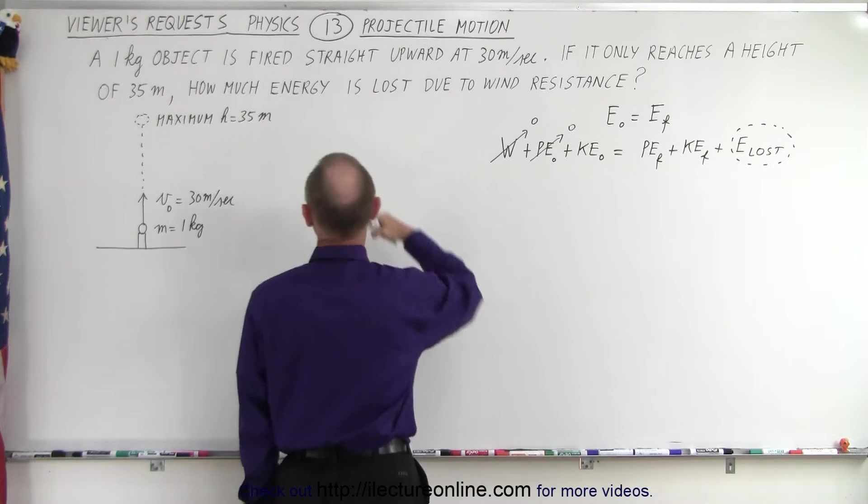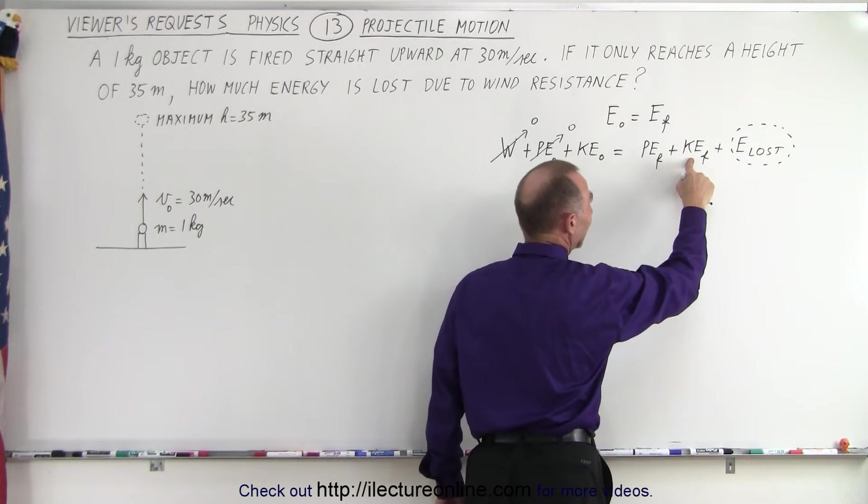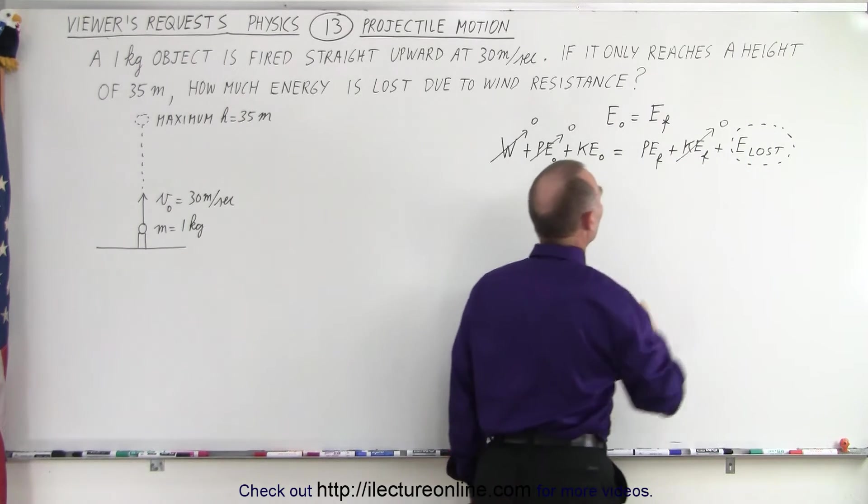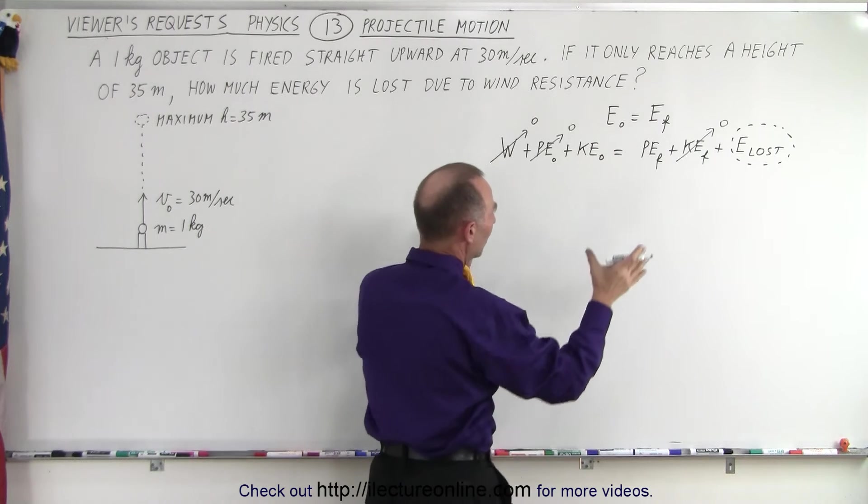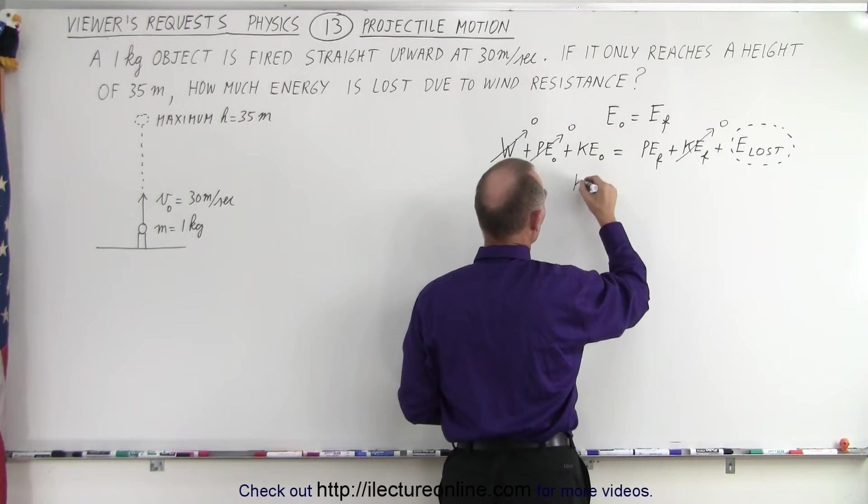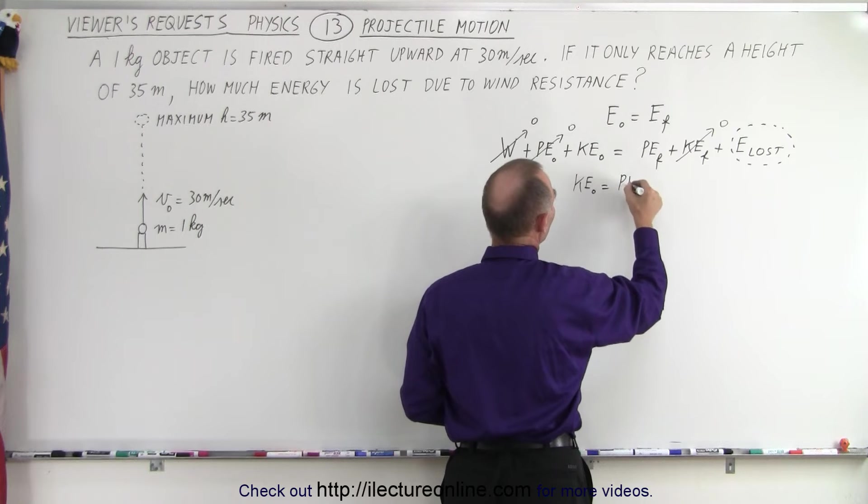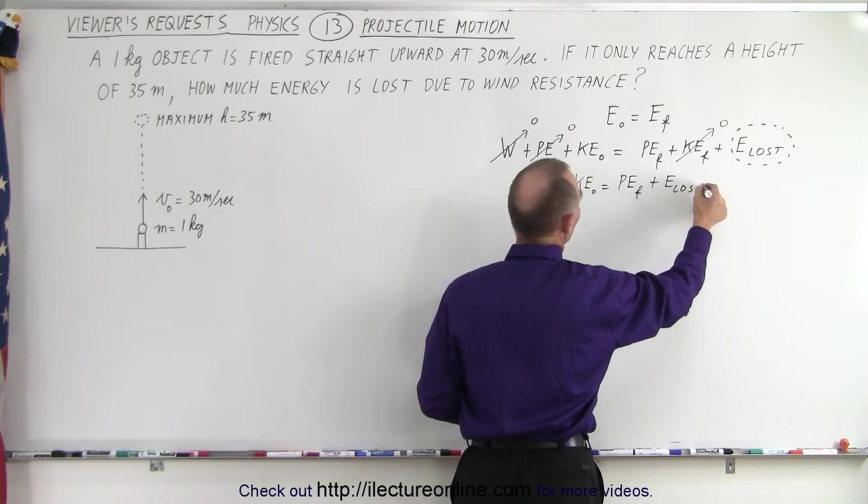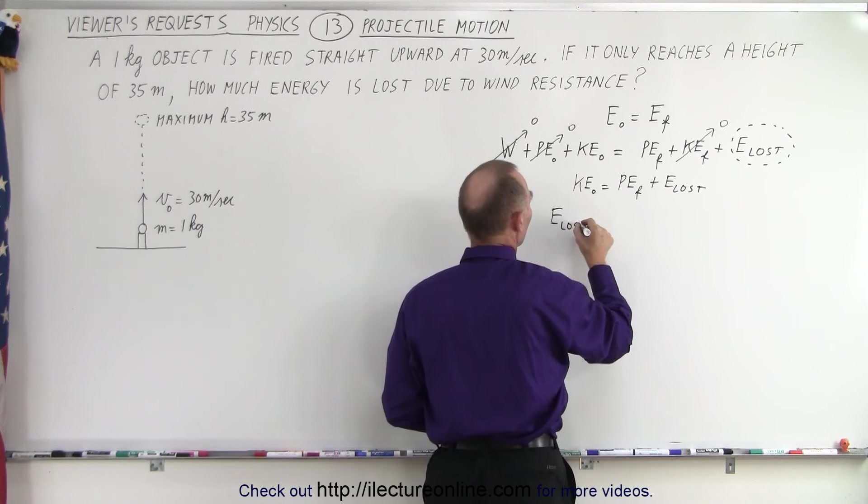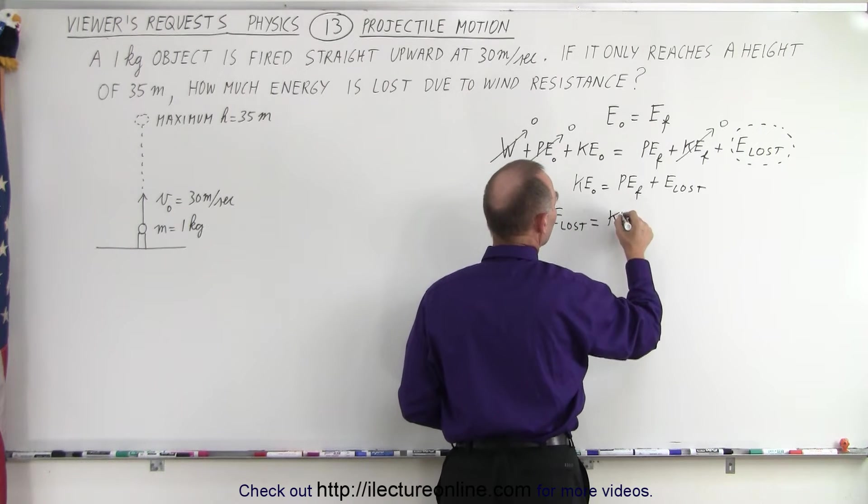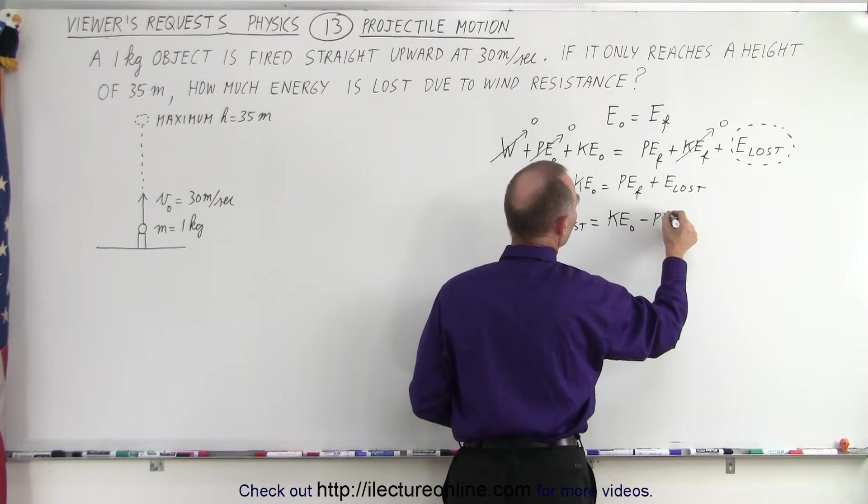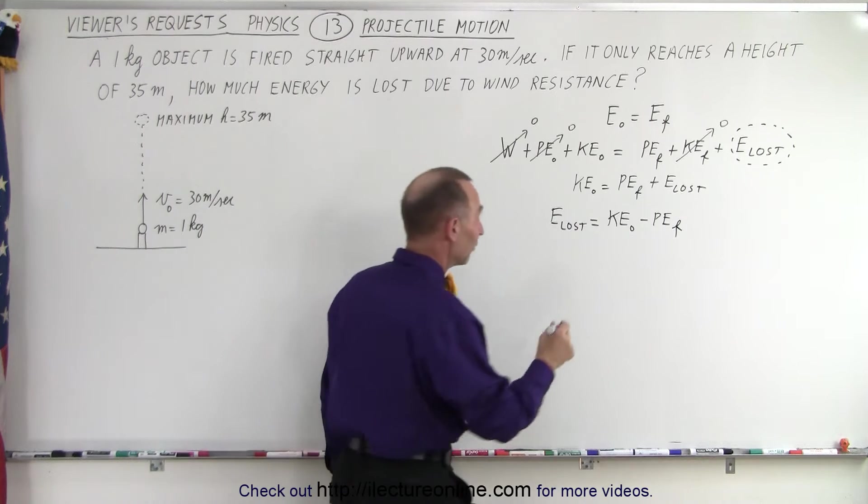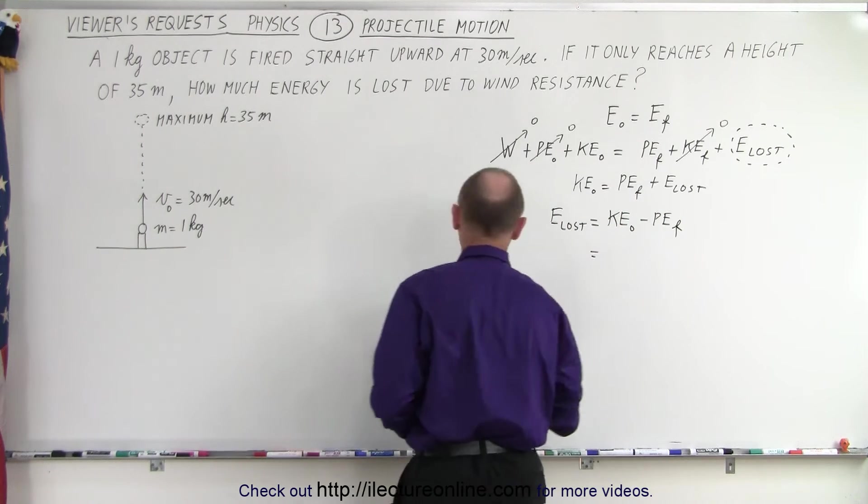When we reach maximum height, at that point, there will not be any kinetic energy because it will not be moving. So that will be zero, but there will be some potential energy. So in other words, the equation now dwindles down to the initial kinetic energy, which will be equal to the final potential energy plus energy lost. So in this case, we could say that the energy lost is equal to the initial kinetic energy minus the final potential energy. All right, that will be easy enough at this point. It was just realizing that that's how we set it up.